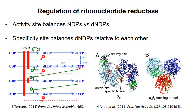As the dTTP concentration increases, it will bind to the specificity site, at which point further reduction of pyrimidine nucleotides is inhibited, and instead the active site prefers to bind GDP, which is converted to dGDP and then phosphorylated to give dGTP.